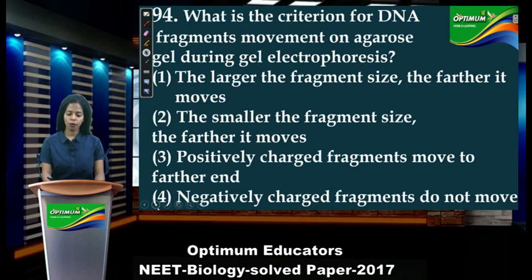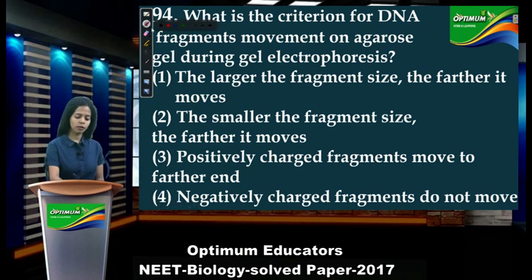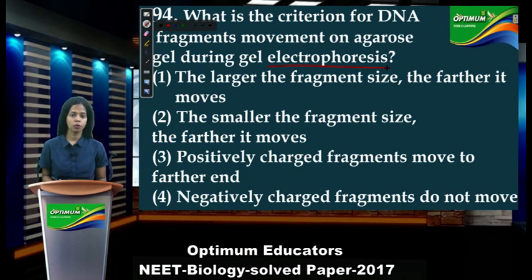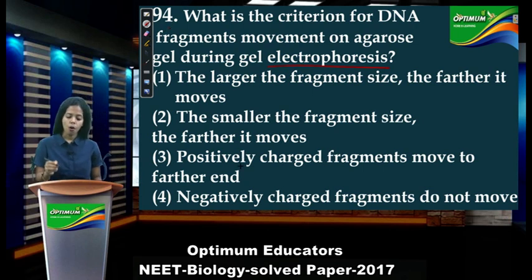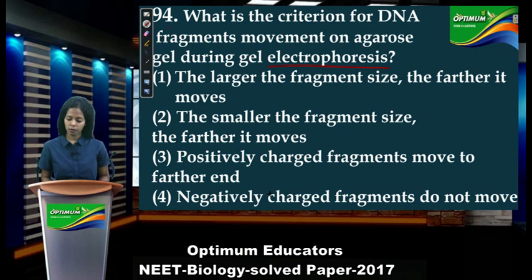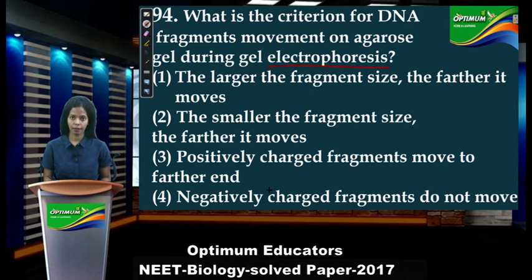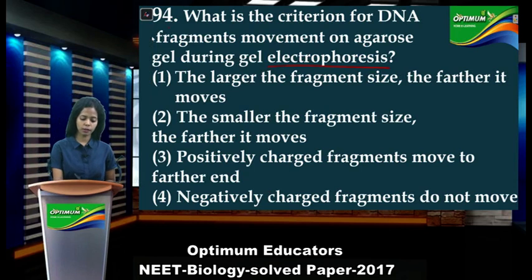Next: 'What is the criterion for DNA fragment movement on agarose gel during gel electrophoresis?' Electrophoresis is the process in which we separate DNA fragments. DNA is a negative molecule. Option 1 says the larger the fragment size the farther it moves — that is wrong. Option 2 says the smaller the fragment size the farther it moves — this is correct. Options 3 and 4 regarding charge direction are not necessary. So option 2 is the correct answer.